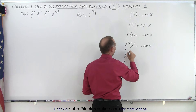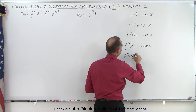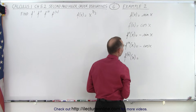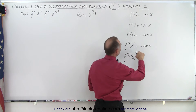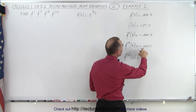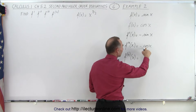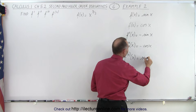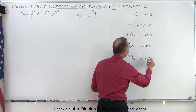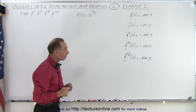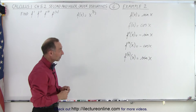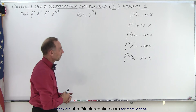And then if I take the fourth derivative of the function f, that would give me the derivative of the cosine is the negative sine, negative times negative gives me positive, so back to the original function — sine of x. So the fourth derivative of sine of x gives me back sine of x. It's kind of interesting.